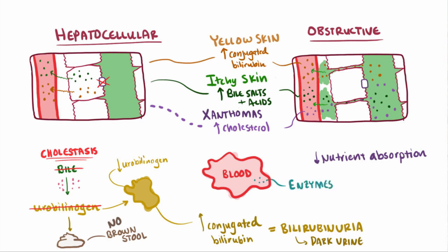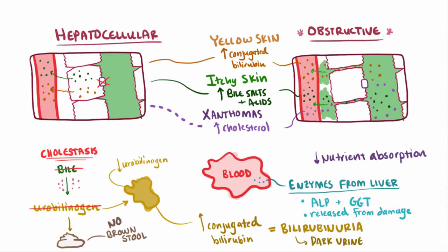Finally, enzymes that are usually found in the liver, like alkaline phosphatase, or ALP, and gamma-glutamyl transpeptidase, or GGT, may also be found increased in the blood. Both of these enzymes are membrane-bound enzymes that are sensitive to hepatocyte damage and can be released when those hepatocytes are damaged or stressed. These signs of cholestasis, whether from obstructive or hepatocellular, are super important to recognize so that the underlying cause of this reduced bile formation or flow can be found, and then the right treatment can be given.